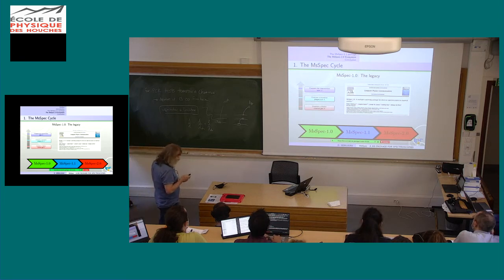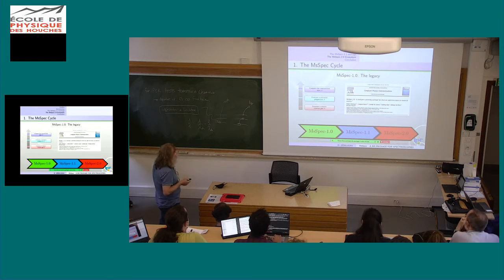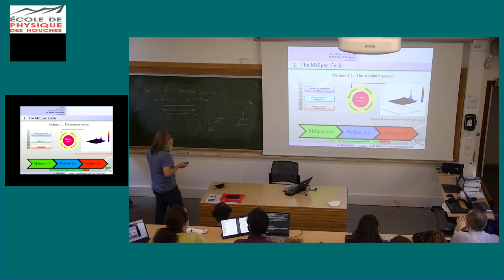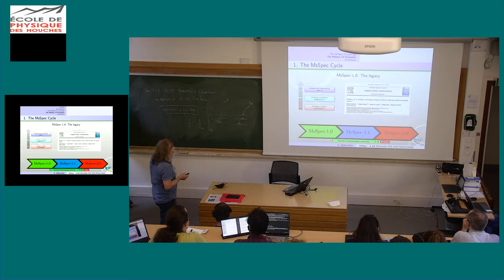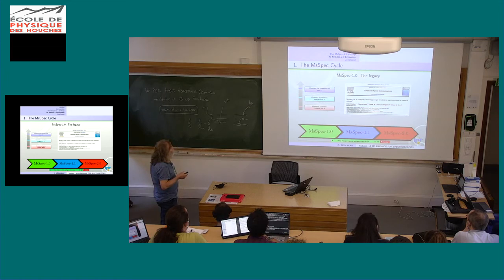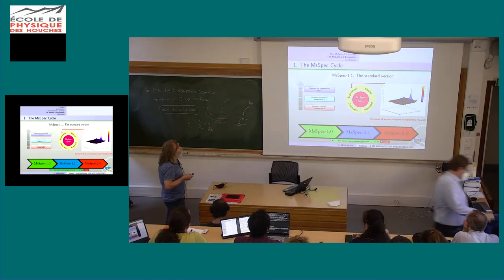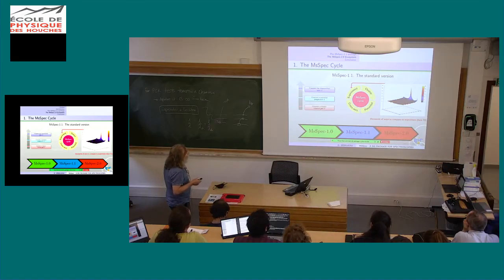The code was published back in 2011. At that time you had to generate the cluster with AAC, generate the potential, and compute the cross-section. Now the cycle to do the calculation starts with an experiment: you take a test cluster which you hope will match your experiment, compute the potential, and then compare.